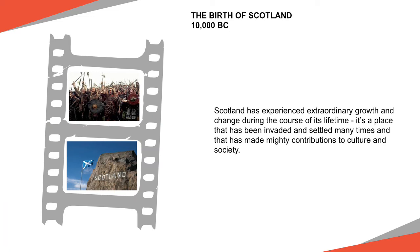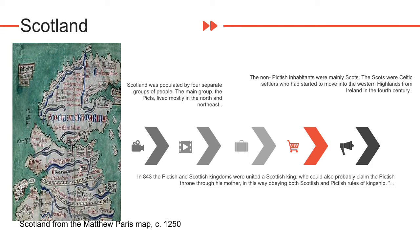The history of Scotland is fascinating and complex. There were Roman soldiers, Vikings, noble clansmen, powerful ruling monarchs and even enlightened philosophers. Scotland was populated by four separate groups of people. The main group, the Picts, lived mostly in the north and northeast. They spoke Celtic as well as another, probably older, language completely unconnected with any known language today, and seem to have been the earliest inhabitants of the land. The Picts were different from the Celts because they inherited their rights, names and property from their mothers, not from their fathers.